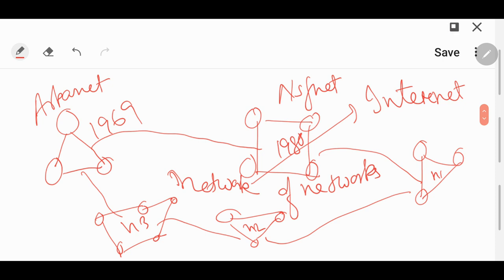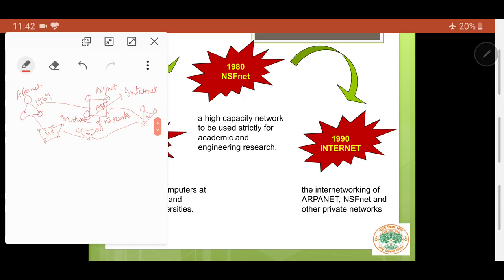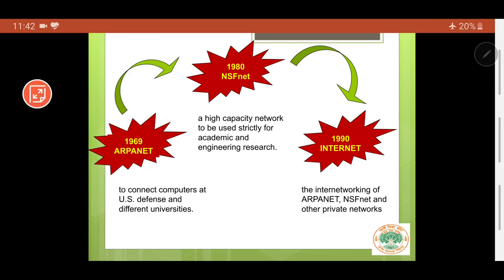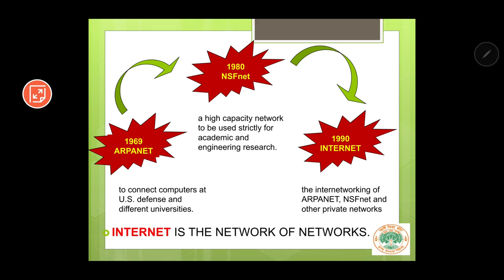This network of networks is known as the internet. When all the networks in the world are connected, then we say it is the internet. It can be concluded that the internet is the network of networks.